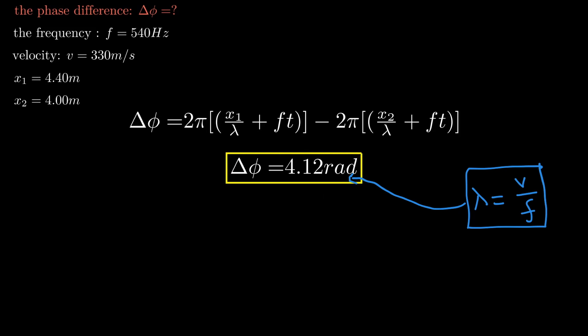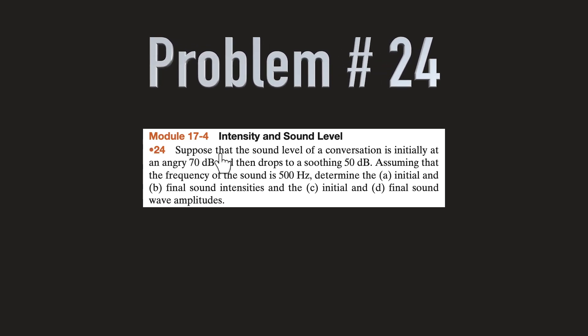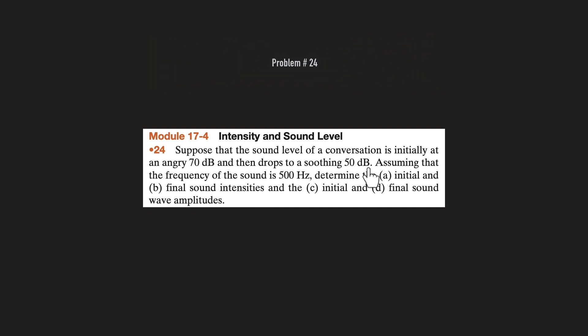Problem number 24: Suppose that the sound level of a conversation is initially at an angry 70 decibels and then drops to a soothing 50 decibels. Assuming that the frequency of sound is 500 Hertz, determine the (a) initial and (b) final sound intensities, and (c) initial and (d) final sound wave amplitudes.